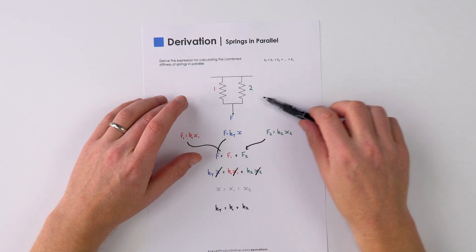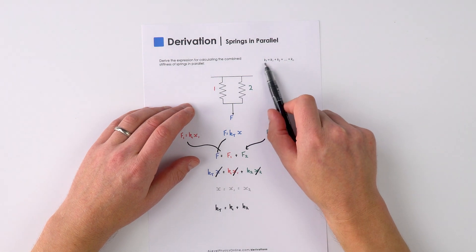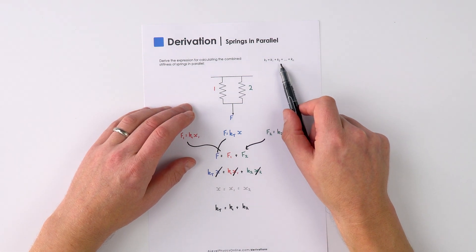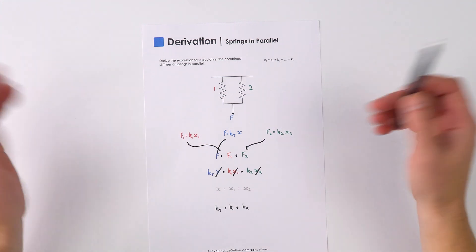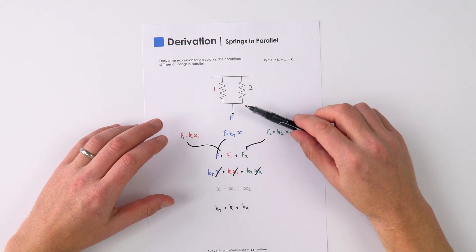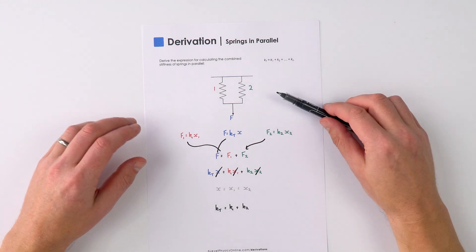And if we had multiple springs in parallel, we'd find that the total spring constant is equal to K1 plus K2 plus however many springs that we have. So that's a quick way to derive the equation for the spring constant for springs in parallel.